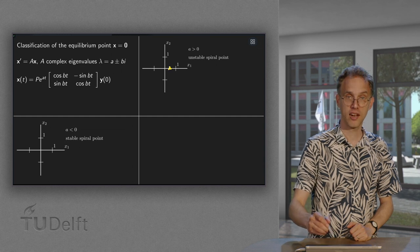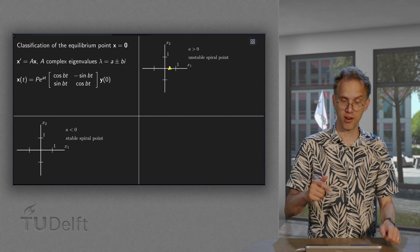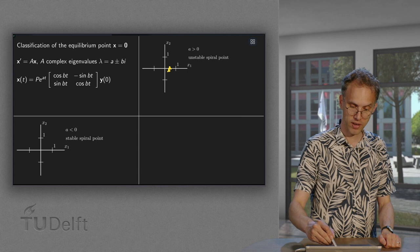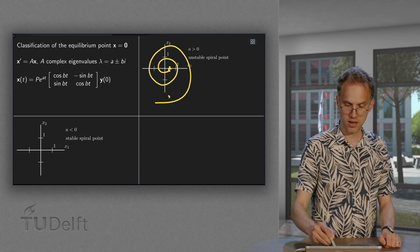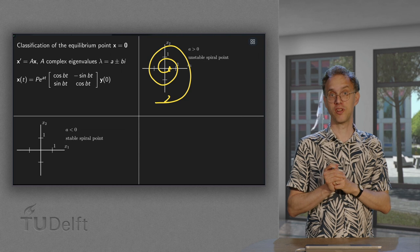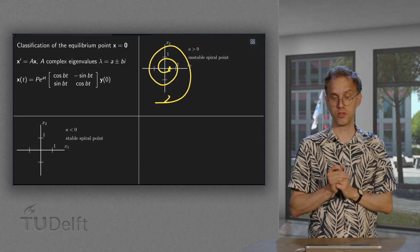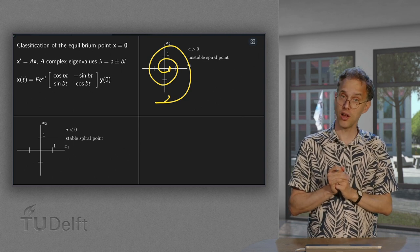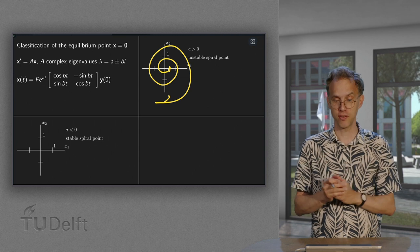So suppose we start somewhere like here. We are still rotating due to our rotation matrix and we get something like this. We are still rotating but now we are going outwards. This is also called a spiral point but now an unstable spiral point because we get further and further.